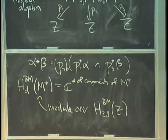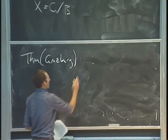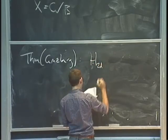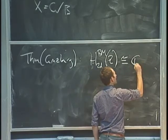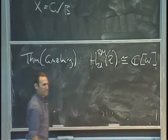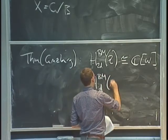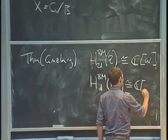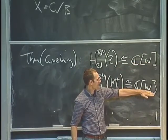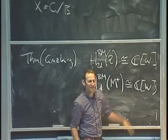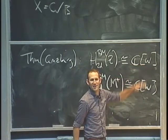A theorem essentially due to Ginsburg: this algebra H_{2d}^{BM}(Z) is isomorphic to the group ring of the Weyl group of G. And the module H_d^{BM}(M+) is also isomorphic to C[W], but now as the regular representation. So this gives a very nice geometric construction of the regular representation of the Weyl group of a simple algebraic group G.